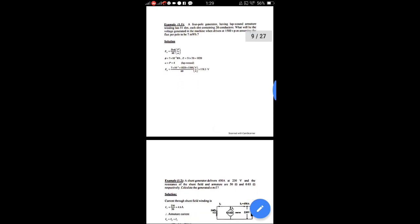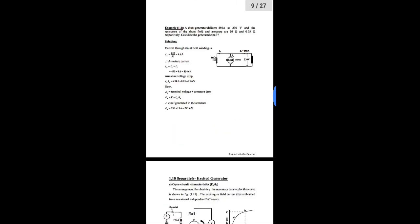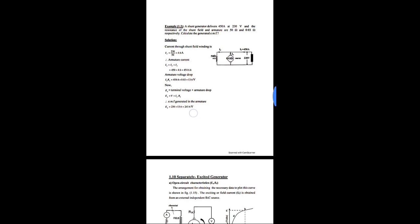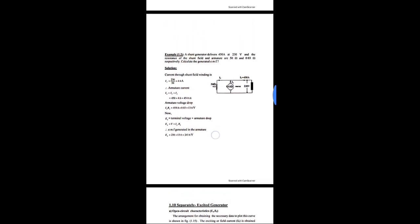In another problem involving back EMF: field current If = 230/50 = 4.6 A. Since the generator delivers power, armature current Ia = IL + If. Armature voltage drop = Ia × Ra. EMF generated equals terminal voltage plus armature drop: Ez = V + Ia·Ra. With V = 230 volts, we add the armature drop to find the generated EMF. Remember: Ez = V + Ia·Ra.